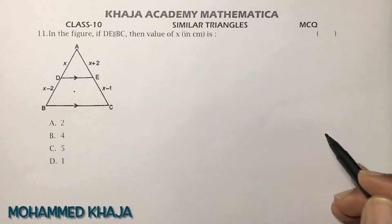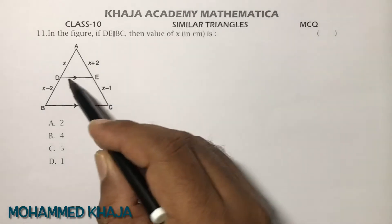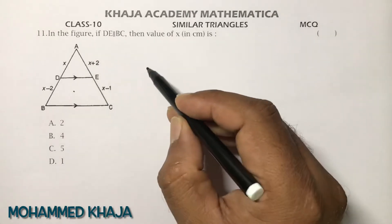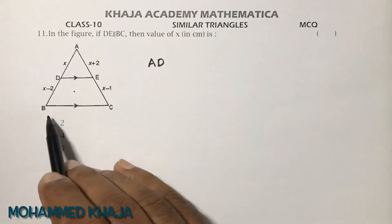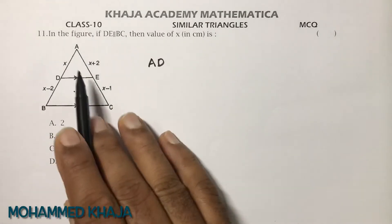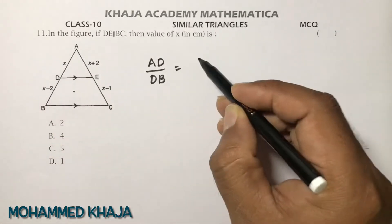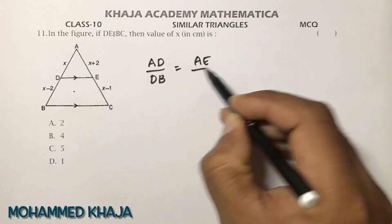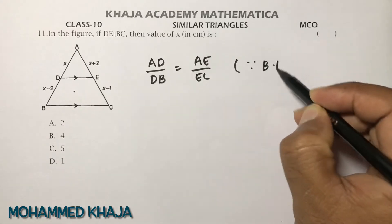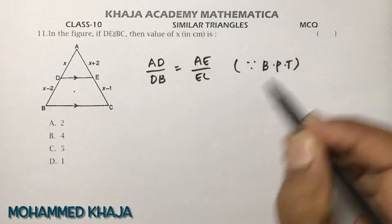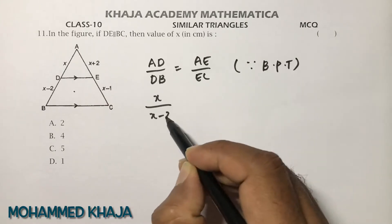In the figure, DE is parallel to BC. Apply BPT — in a triangle, a line drawn parallel to one side divides the other two sides in the same ratio. So AD/DB = AE/EC. This is the Basic Proportionality Theorem (Thales theorem).